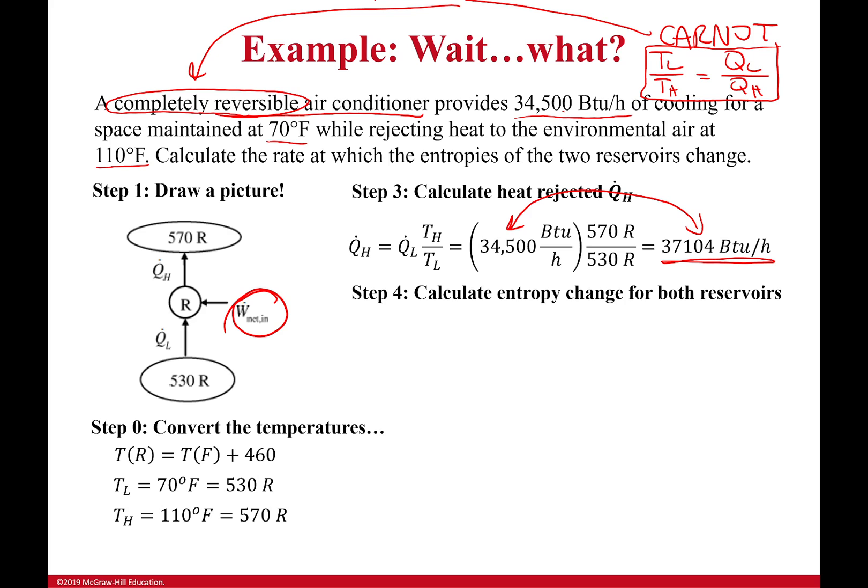Okay, now what is my entropy change for both reservoirs? We'll start with the outside. So I'm sending heat to the outside, the outside is hotter, that's why I have the H right here. And so the amount of heat I'm sending into the outside is 37,104 BTUs per hour at 570 Rankine. So that is a total entropy change of 65.09 BTUs per hour Rankine.